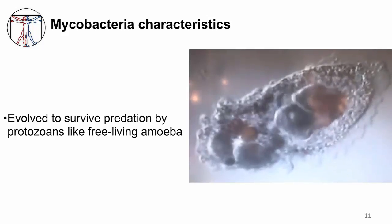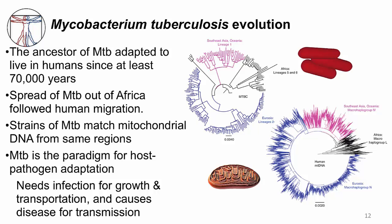Some mycobacteria have entered animals and evolved to adapt to humans. Perhaps the initial encounter with animals was through aerosolized water droplets containing environmental mycobacteria. Mycobacterium tuberculosis is an example of successful adaptation to humans, which began tens of thousands of years ago. MTB has co-evolved with humans — in fact, the spread of MTB out of Africa followed human migration. The strains of MTB match mitochondrial DNA from the same regions of the world. MTB is the paradigm for host-pathogen adaptation, having evolved its entire life cycle within humans.